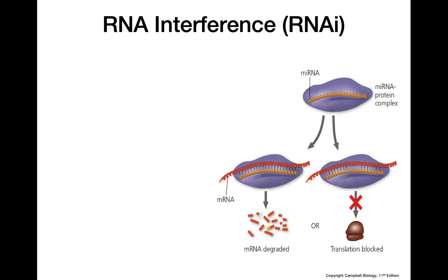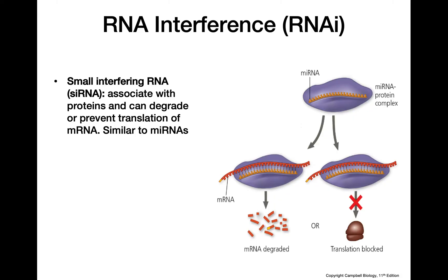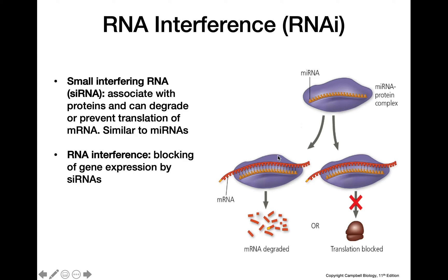RNA interference is done with something called small interfering RNAs. These siRNAs are going to associate with proteins that are capable of degrading or preventing the translation of the mRNA. They're very similar to microRNAs. RNA interference is, by definition, this process of blocking gene expression by using small interfering RNA molecules.